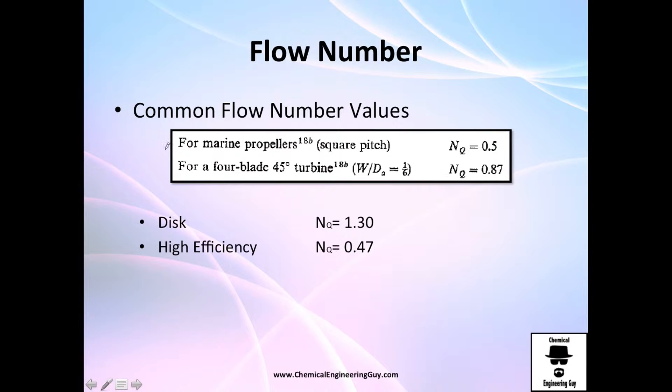Common flow number values, well, depends of course on the impeller size or type, but for example, you've got this value right here, this value right here, or a 4-blade 45 degree turbine.